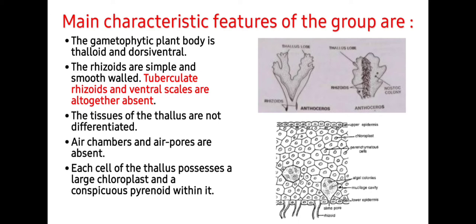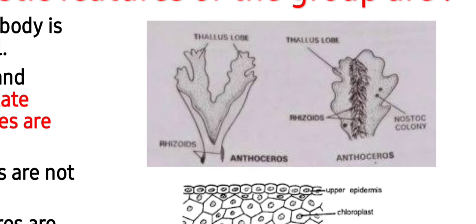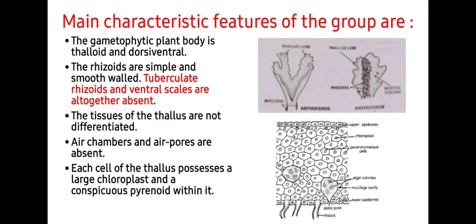The main characteristic features of the group are: the gametophytic plant body is thaloid and dorsiventral, like Marchantia. You can see here the dorsal as well as ventral surface of the thallus. The rhizoids are simple and smooth-walled. Tuberculate rhizoids and ventral scales are altogether absent. The tissues of the thallus are not differentiated as they are in Marchantiales — you will find homogenous tissue containing chloroplasts. Air chambers and air pores are absent.